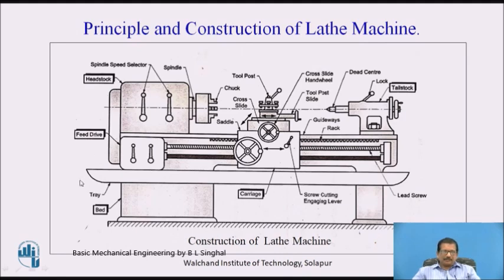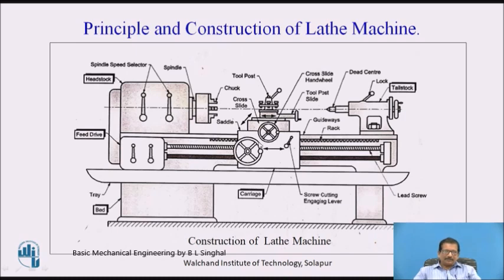The lead screw receives its drive through the headstock by a certain gear train, and this can be changed by replacing different gears, which changes the relative speeds of the spindle and lead screw depending on the desired finish. If you want a good finish, you can make the feed slower; if you want to remove more material, it will be comparatively faster. Depending upon the surface finish requirement, the travel speed of the carriage or compound slide can be adjusted.